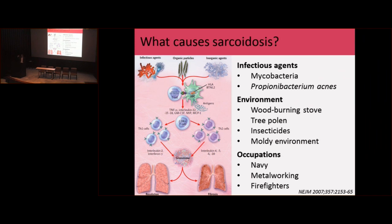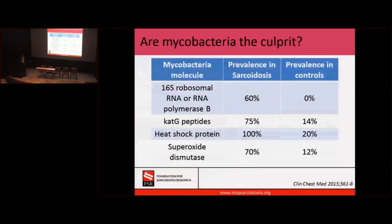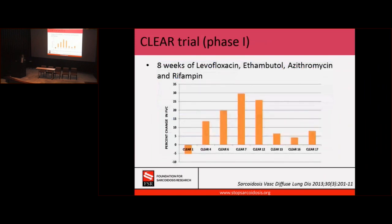We don't know exactly what in the smoke caused the sarcoidosis, but we do have studies showing that some of those firefighters developed sarcoidosis. Another area of interest is infection. Maybe some type of infection causes sarcoidosis. There's mycobacteria — many studies show we can actually find pieces of mycobacteria in the granulomas of sarcoidosis patients. A lot of people started to think: if we can find those pieces there, maybe this mycobacteria is causing this disease. We have studies treating patients with sarcoidosis with specific antibiotics for that mycobacteria.